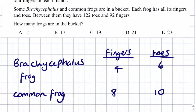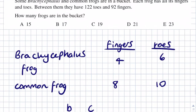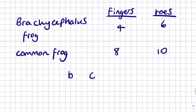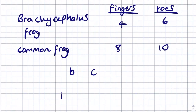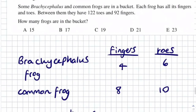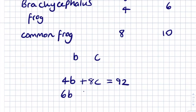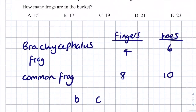We obviously know it's going to be between two different species. If we represent the brachycyphilus frog with the letter B and the common frog with the letter C, then we can form two simultaneous equations. For fingers: 4B + 8C = 92. For toes: 6B + 10C = 122.